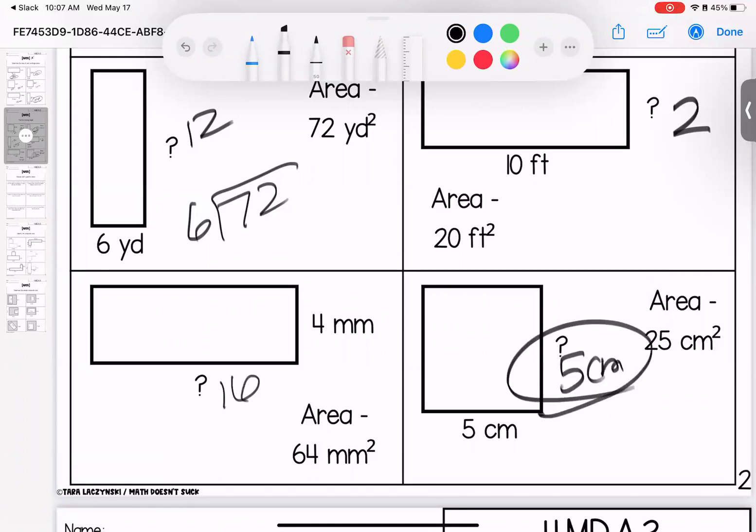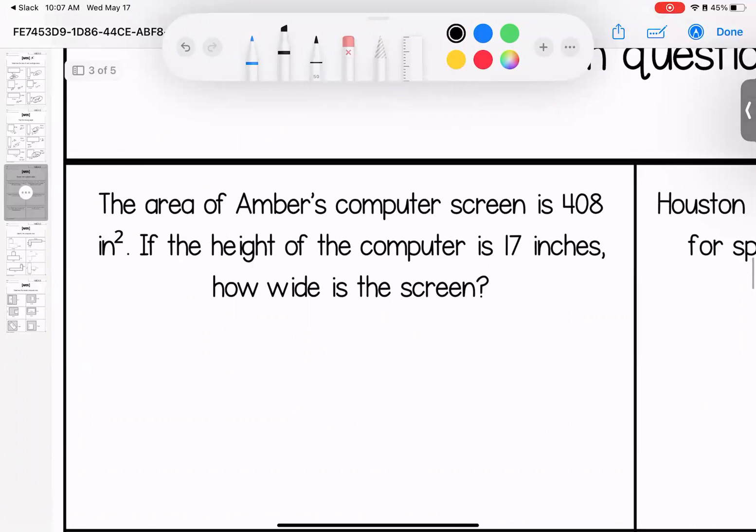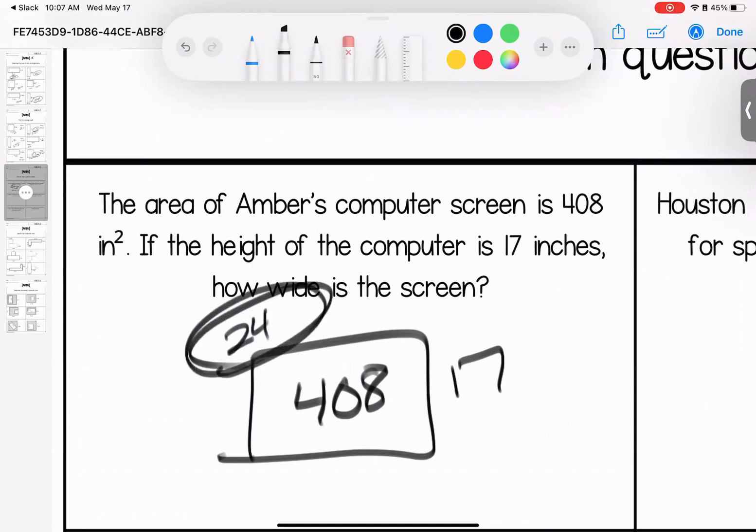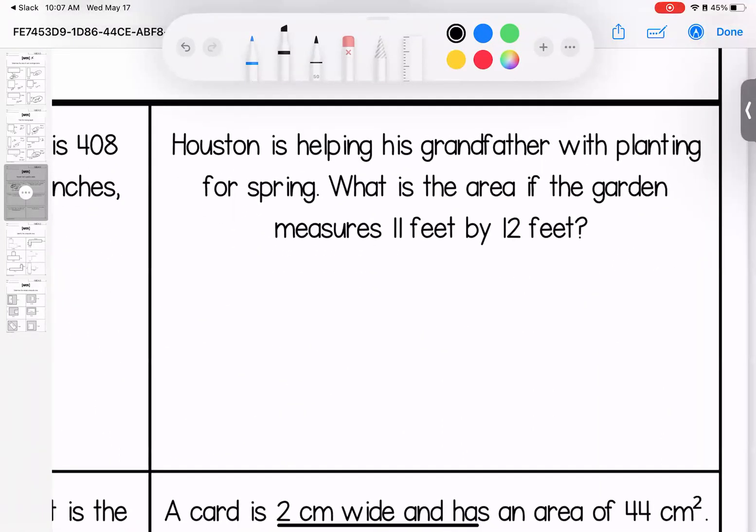25 divided by 5, missing piece of 5. Questions on these, as always bring them to class. Looking at it as a word problem, it says that the area of a computer screen is 408 inches squared. If the height is 17, how wide is the screen? So we need to do division: 408 divided by 17 gives us a missing piece of 24.